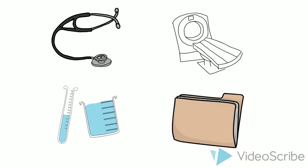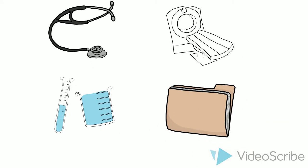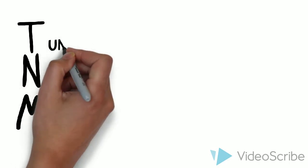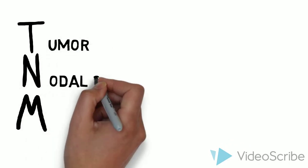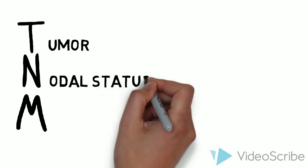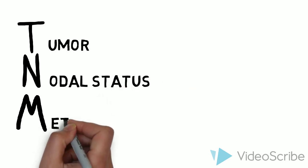Stage is commonly determined by the TNM staging system. This is not the only staging system, however it is the most common. The T represents the tumor stage, the N is the nodal status, and the M represents the metastases.